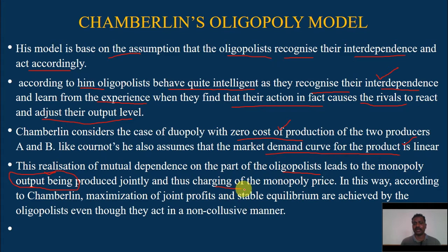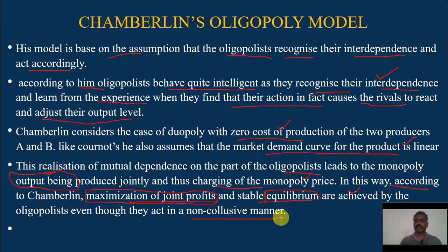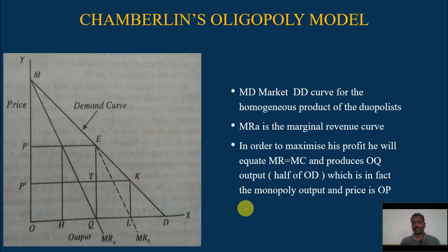Since their interdependence is recognized, they are producing monopoly output jointly and charging the monopoly price — a very high price. According to Chamberlain, maximization of joint profits and stable equilibrium are achieved. They understand that they are mutually dependent and that is why they earn the maximum joint profit. There is a stable equilibrium even though the oligopolists are acting in a non-collusive manner, and still they earn maximum profit.